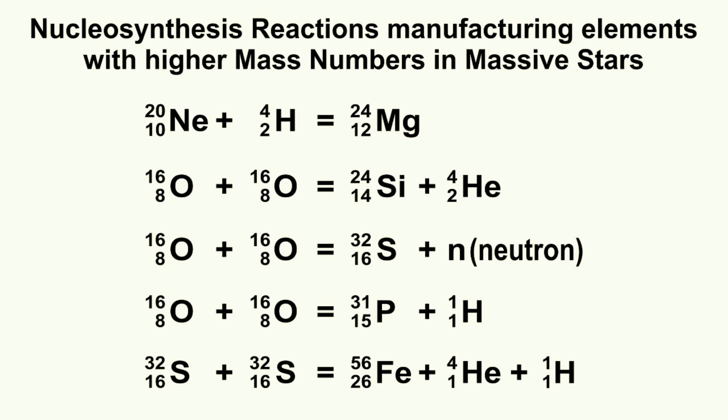Let's look at the critical fusion reactions of gaseous oxygen, in which three non-metallic elements like silicon, sulfur, and phosphorus are manufactured. In each of these reactions, hydrogen and helium are either added or expelled. When the resulting nuclide has an even A or even Z, it is more stable. Phosphorus has neither even A nor even Z, so being far less stable, it is also far less abundant than silicon or sulfur.